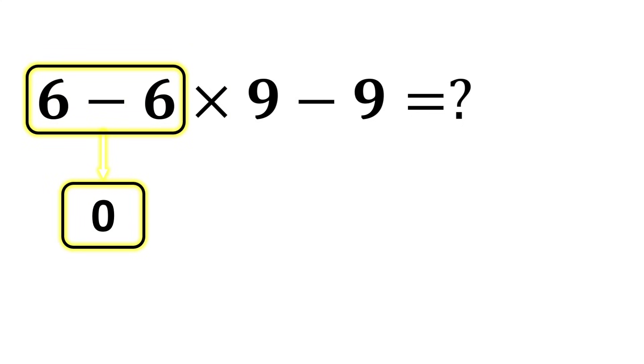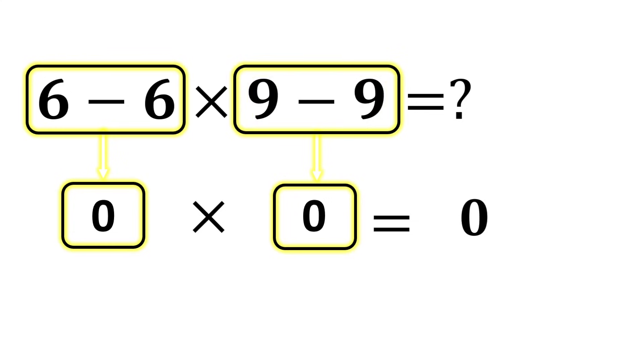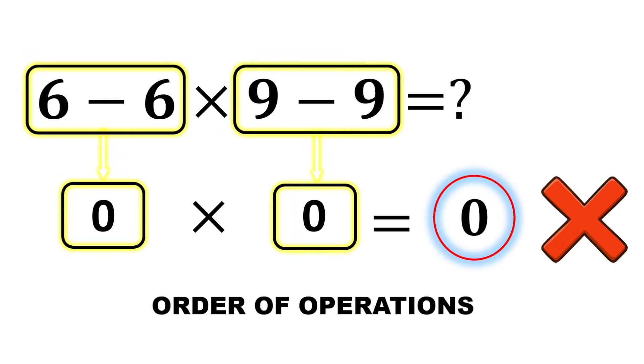6 minus 6 equals 0, and 9 minus 9 equals 0, and 0 multiplied by 0 equals 0. But this answer is not correct because we did not follow one of the most important rules in mathematics: the order of operations.